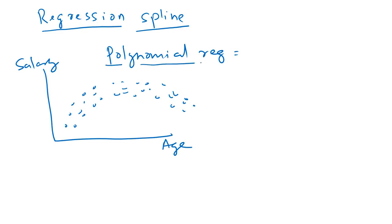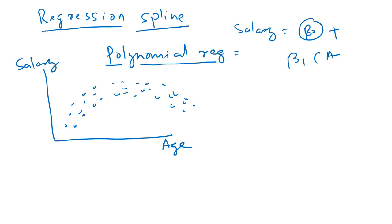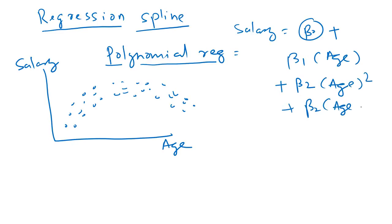Normally we use polynomial regression for this. The polynomial regression would be: salary (the target variable) equals beta naught plus beta one times age. The first variable is age, then we also take the quadratic term age squared, and also the cubic term. We can use as many polynomial terms, but we will go ahead with only three.